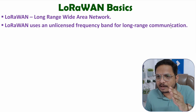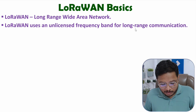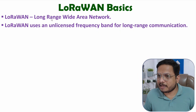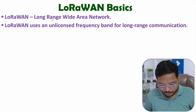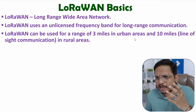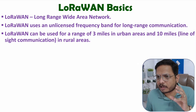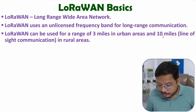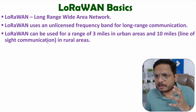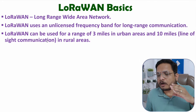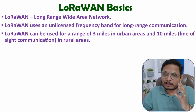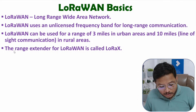Devices use narrow bandwidth only, and with narrowband devices you can achieve long range communication. LoRaWAN can be used for a range of three miles in urban areas — about 4.8 kilometers — and 10 miles in rural areas, approximately 16 kilometers, achievable with line-of-sight communication. Based on that range, a wide area network can be created. If you want to extend the range, you can use a range extender.